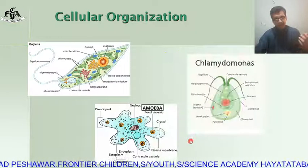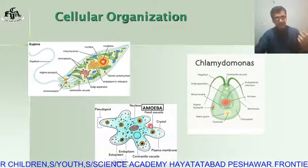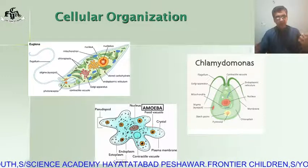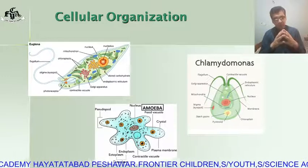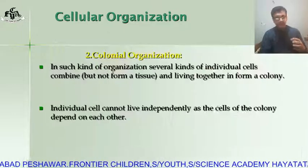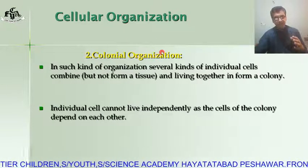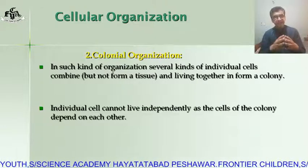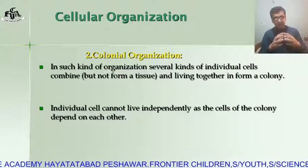Examples of unicellular organisms are Amoeba, Euglena, and Chlamydomonas. You can see these unicellular organisms only under a microscope in your practical. The next organization is colonial organization.